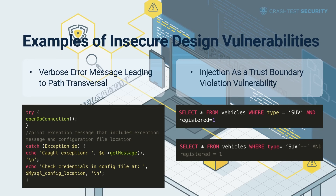Examples of attack scenarios leveraging insecure design include verbose error messages leading to path traversal. Error messages that return detailed information may direct attackers to files containing valuable information. Attackers can access those files and directories using path traversal techniques, enabling further compromise. The following code snippet shows a PHP database error that exposes the system structure to malicious users. From the above error message, the malicious user can access the MySQL config location and obtain credentials to access the database or replace the configuration file with a malicious one.